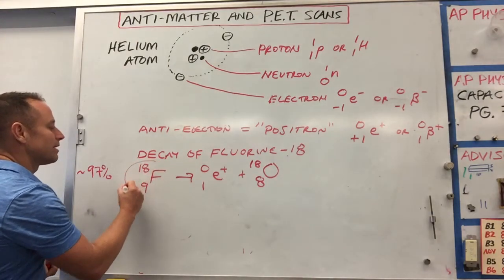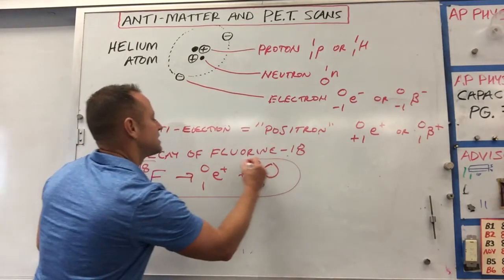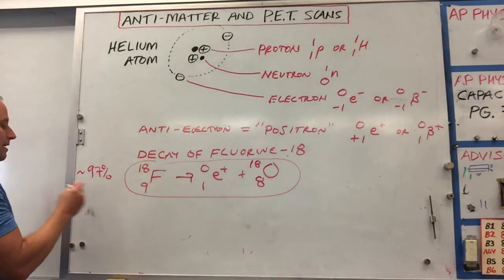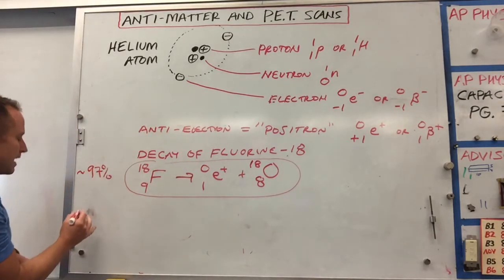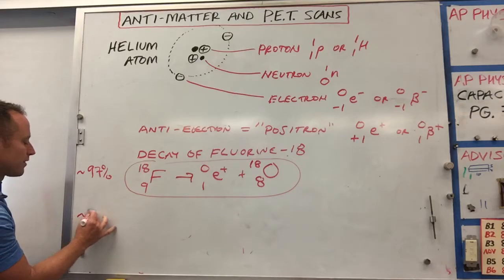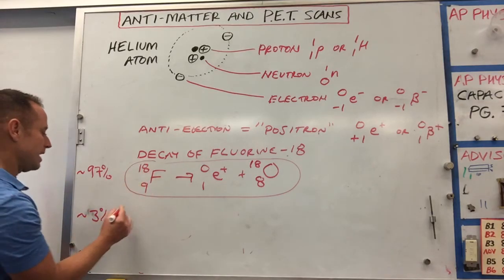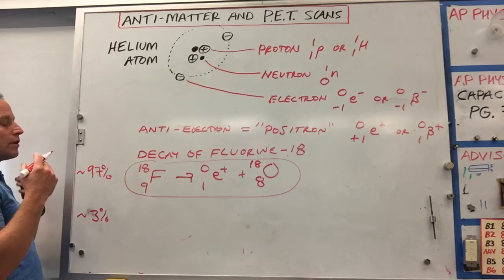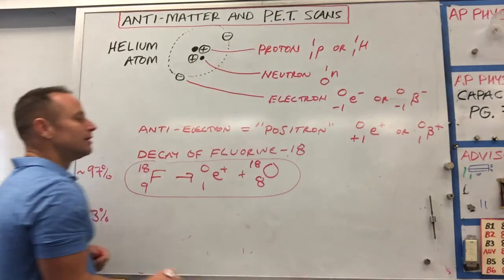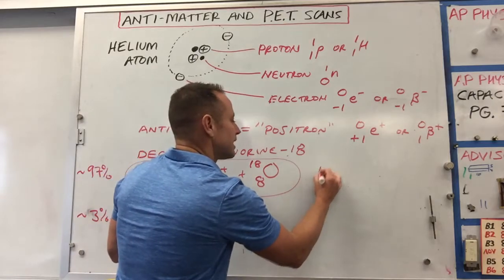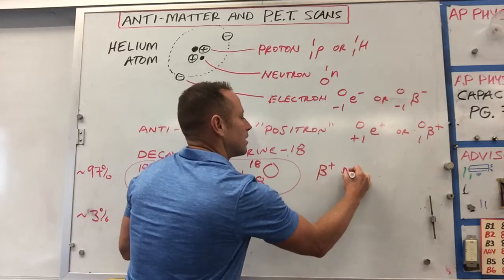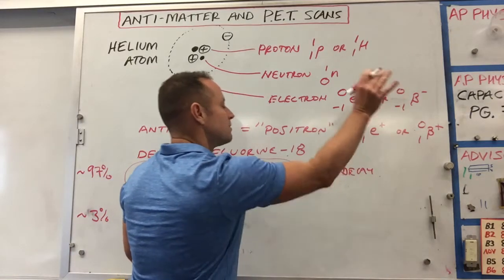This reaction, we're going to see how this gets used in medicine in a moment. Just for the heck of it, as it turns out, about the other like 3% of the time, the way that this thing will decay is it will do what's called an electron capture. So this would be a beta plus decay. Positron emission.